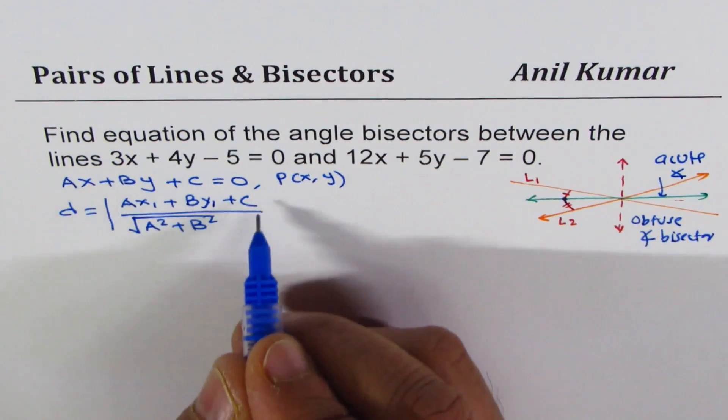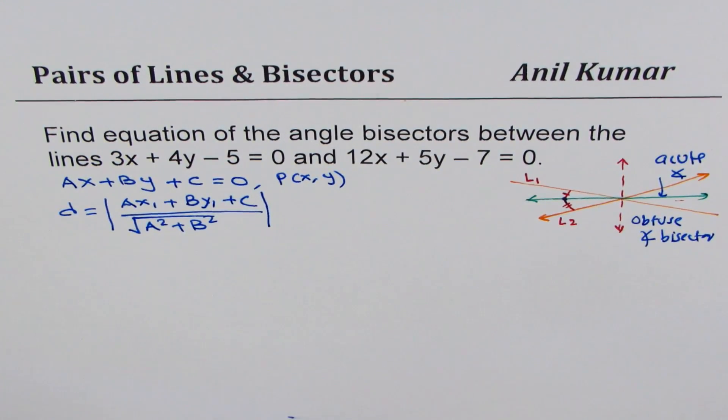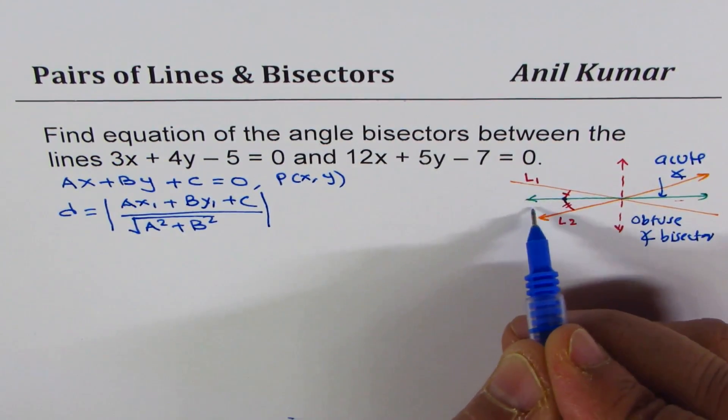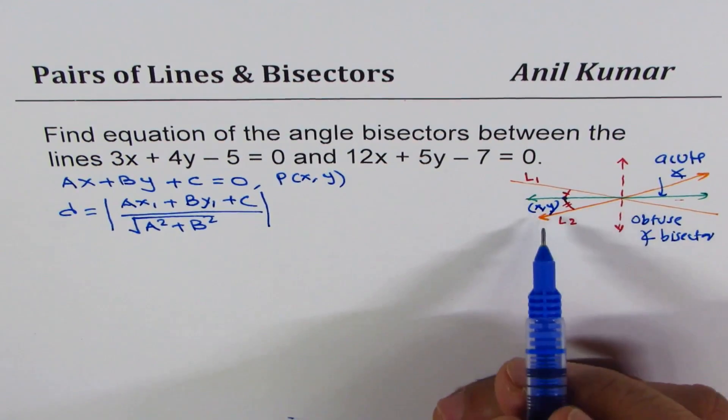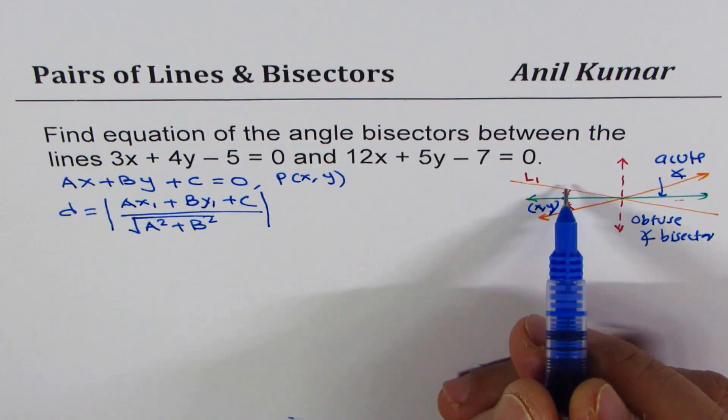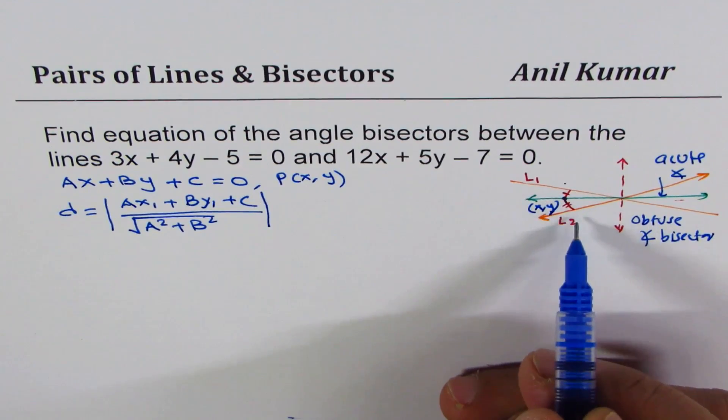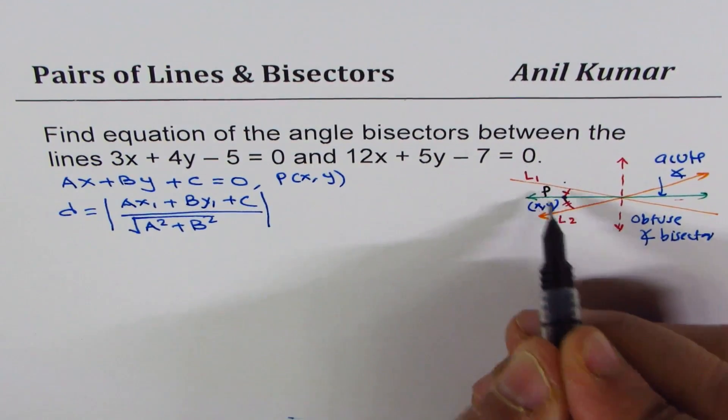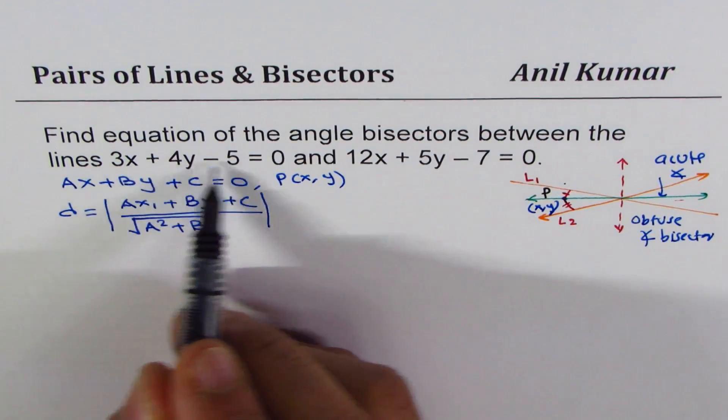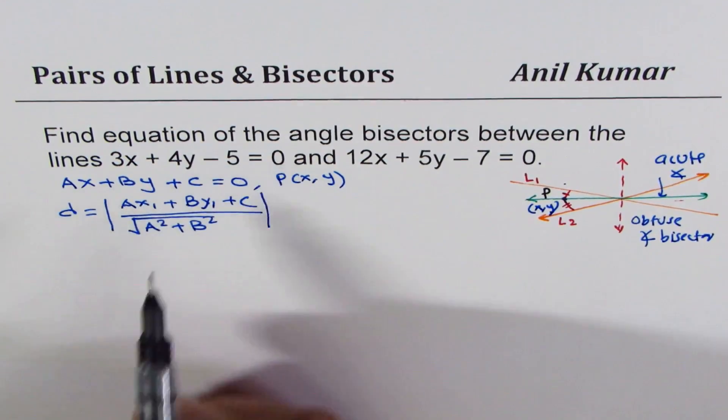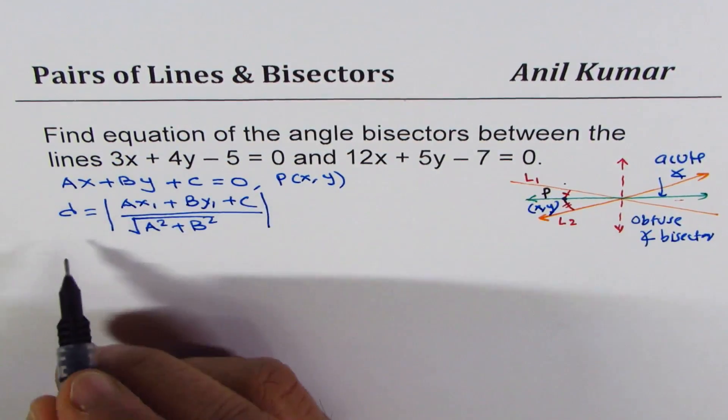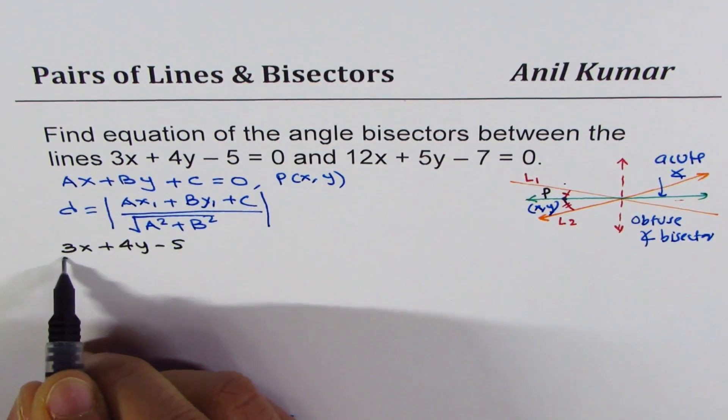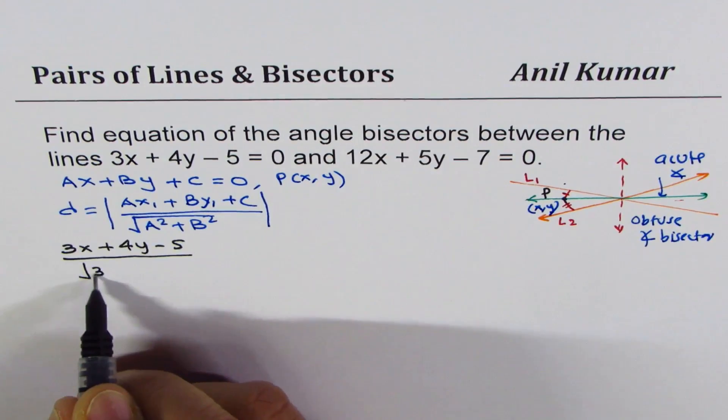Let's assume a point (x, y) on the bisector. We'll find the distance from this point to line L1 and L2 and equate them. The distance from point P(x, y) to the first line 3x + 4y - 5 = 0 is |3x + 4y - 5| / √(3² + 4²).